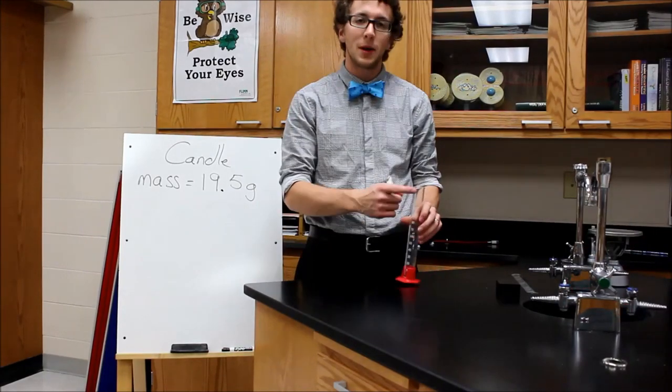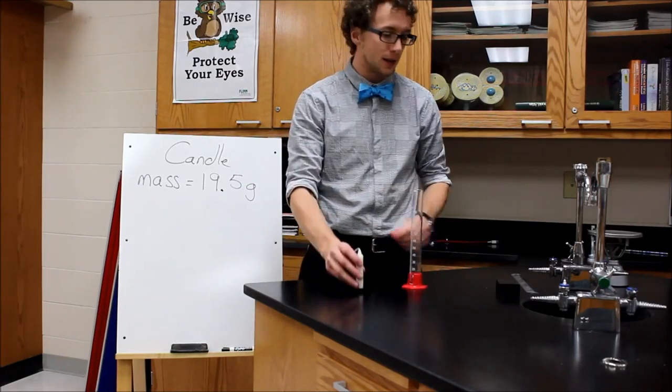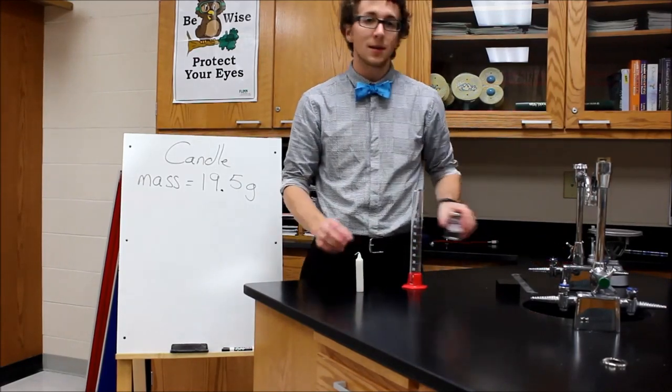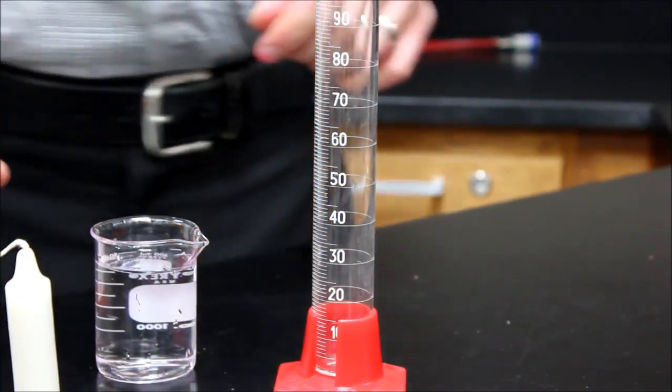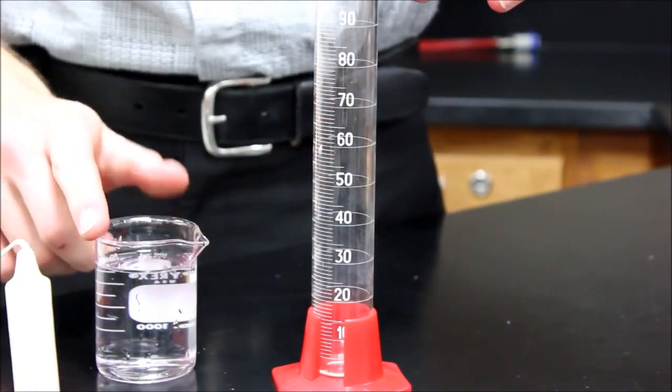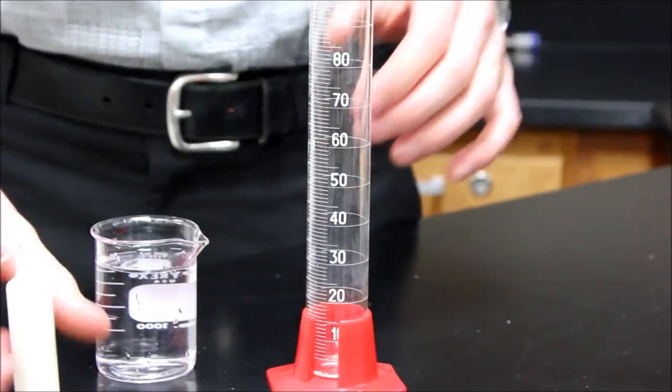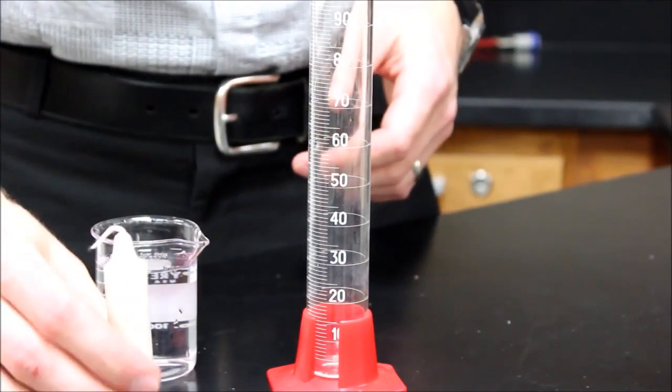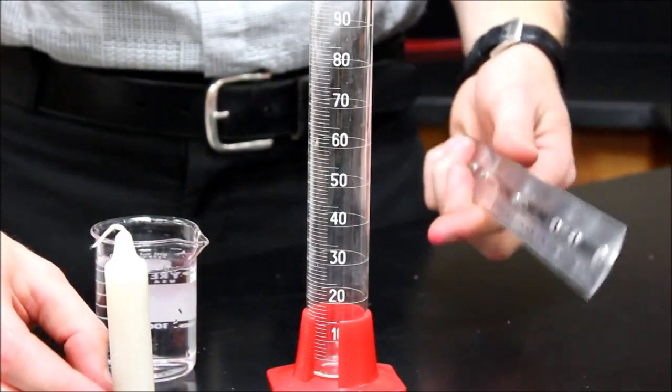So I use my graduated cylinder, my object, and some water. So with my graduated cylinder, my water, and my candle I'm able to find the volume of my candle. And since it's an odd shape, I can't just use my ruler and find the length times width times height.